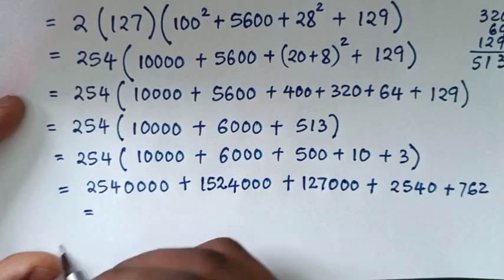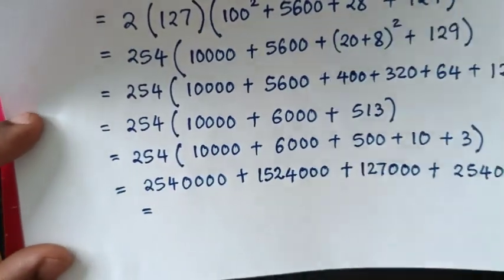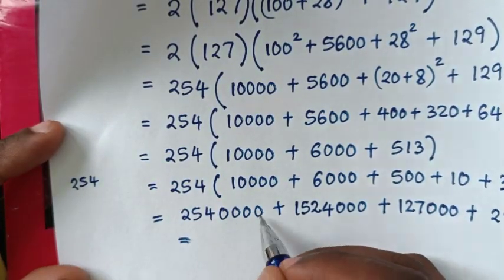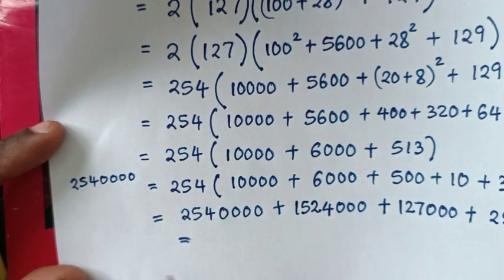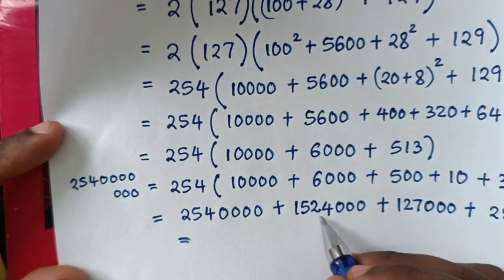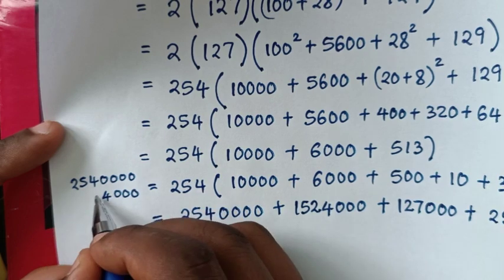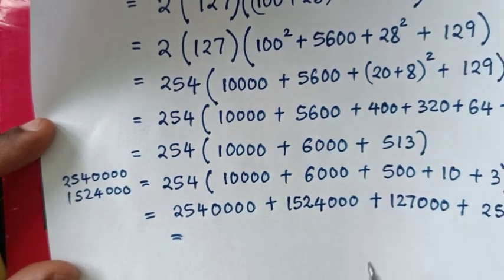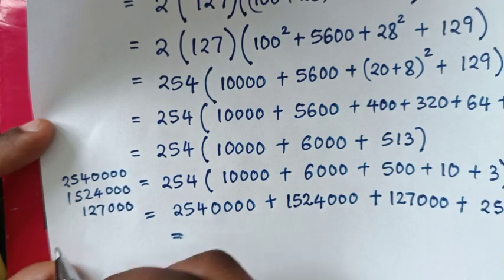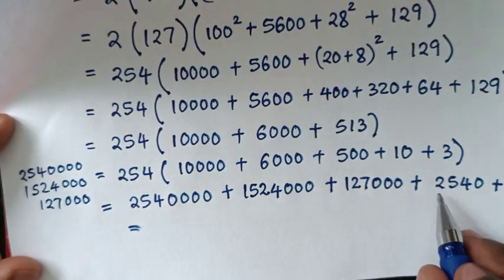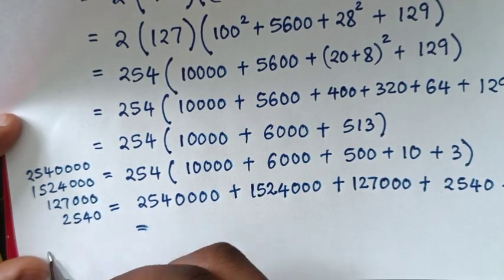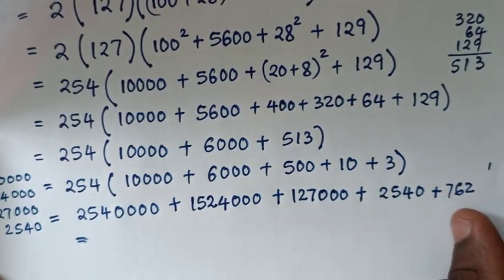Now we take the sum, adding all the terms together. We have 2254, then 10000 plus 1524, then three zeros plus 127, then 2540, then 7627. Adding column by column to get the final result.